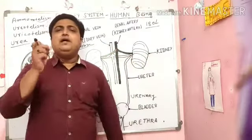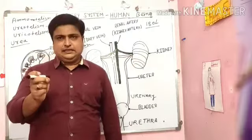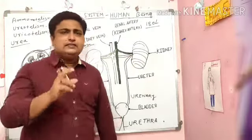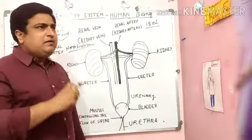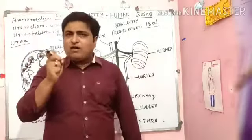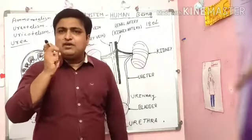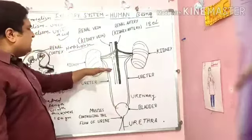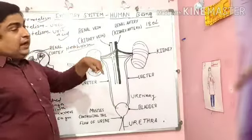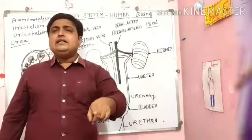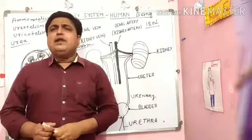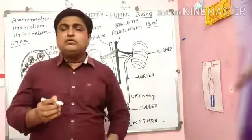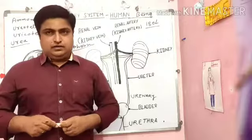The kidney is the filtrative unit and the main excretory organ in our body. Filtration takes place in the kidney, and within the kidney, structures called nephrons are present. These nephrons filter the blood.